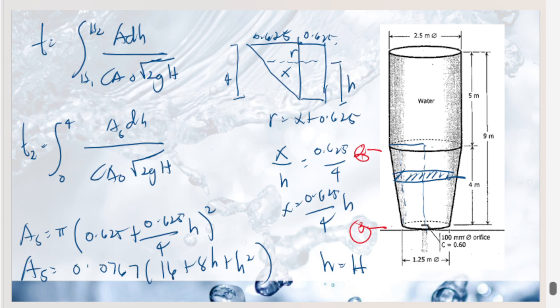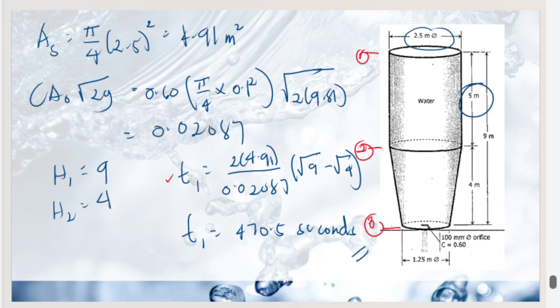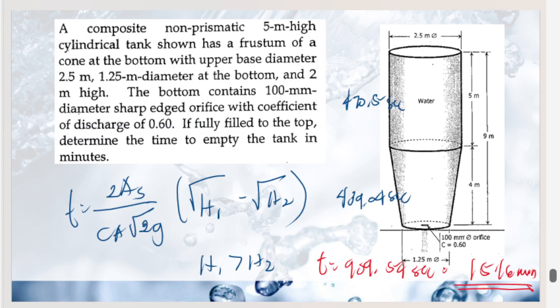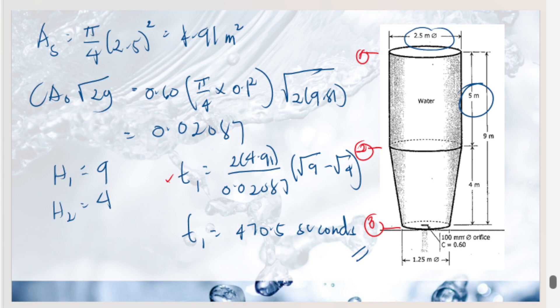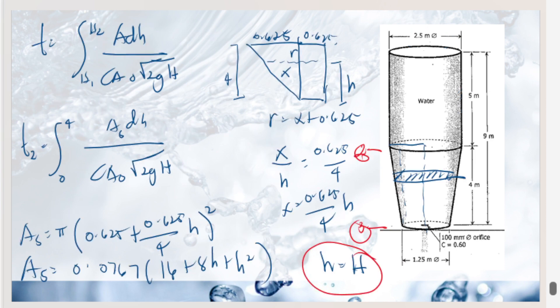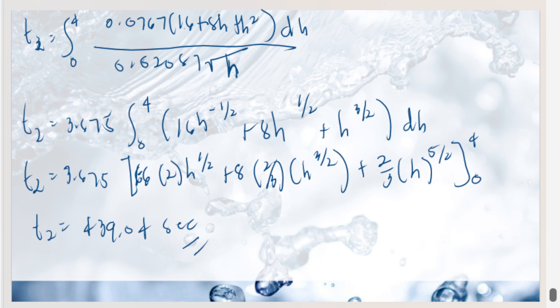To summarize Problem 2: we separated the computation with respect to the upper cylindrical section and the lower frustum cone. Unlike Problem 1, this problem involves only water, so h remains h without conversion. But if you had two different liquids, you would need to convert to an equivalent height of the heavier liquid. The total time to empty the composite tank is 15.16 minutes.